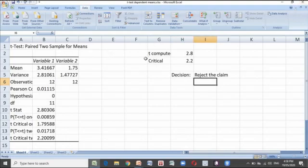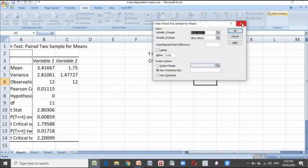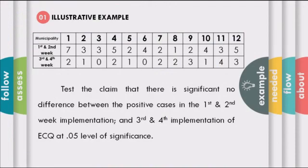If you will be using t-test dependent means using the data analysis, kindly look at the data analysis icon, then search for t-test paired to sample for means, then click OK. We are now through with our illustrative example.